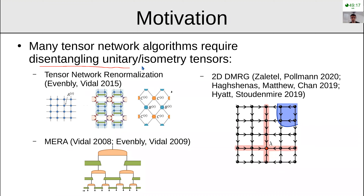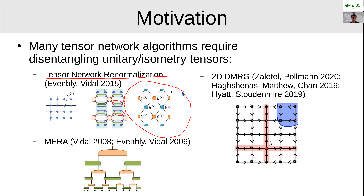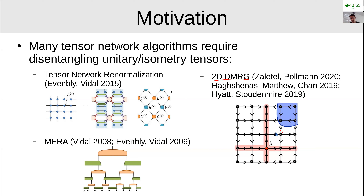For example, tensor network renormalization requires putting in unitaries in order to coarse-grain your tensor network. MERA also requires some unitary to try and coarse-grain a wave function, and these new 2D DMRG algorithms require an isometry to represent their 2D DMRG tensor.